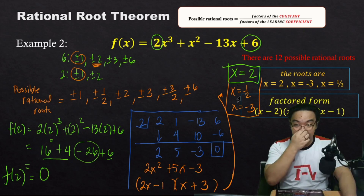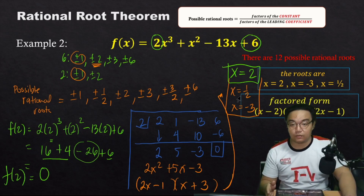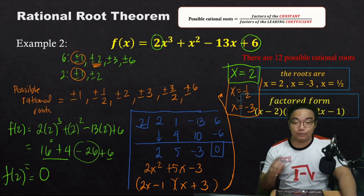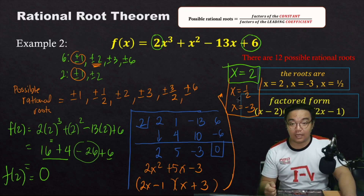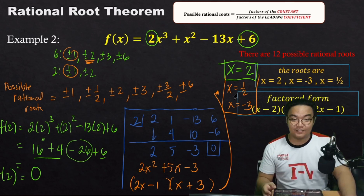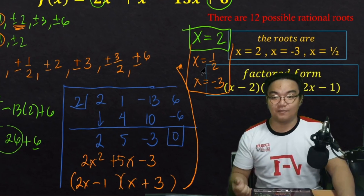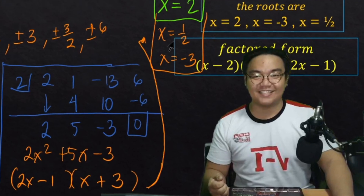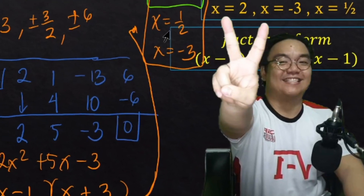So the three roots of 2x³ + x² − 13x + 6 are x = 2, x = −3, and x = 1/2. That is how to apply the rational root theorem in finding the zeros of a polynomial. I hope you learned something from today's video, and I'll see you in the next one.